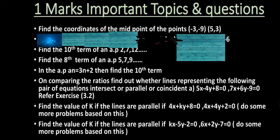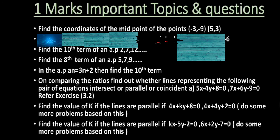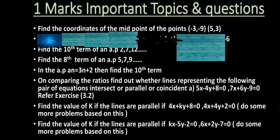Next, on comparing the ratios, find out whether lines representing the following pair of equations intersect or are parallel or coincident. You know by using the condition a1/a2, b1/b2, and c1/c2, whether it's parallel, intersecting, or coincident. You need to apply and check whether the lines intersect, are parallel, or coincident. It's also most expected question. Next, find the value of K if the lines are parallel. Do some more problems based on this because it's an important question for one mark. I've given two types of questions also.